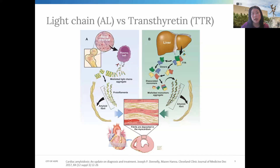AL amyloidosis is typically associated with other plasma cell disorders like multiple myeloma, can also be seen in other hematologic conditions like certain types of lymphomas, but can also just be a standalone condition not related to an underlying hematologic malignancy.